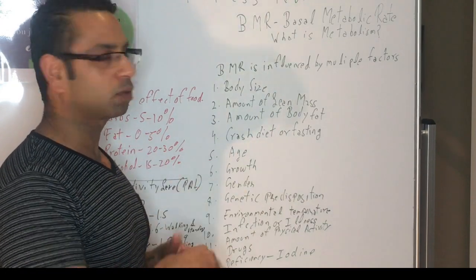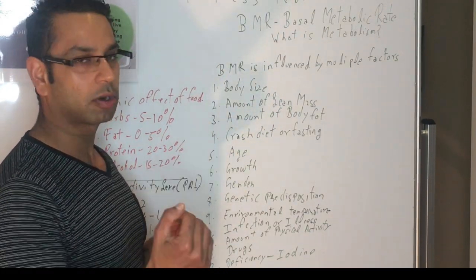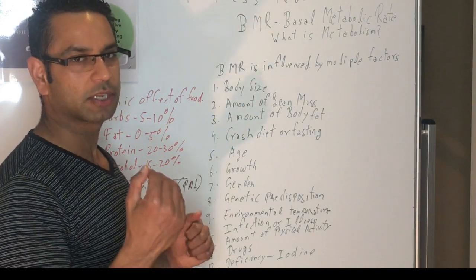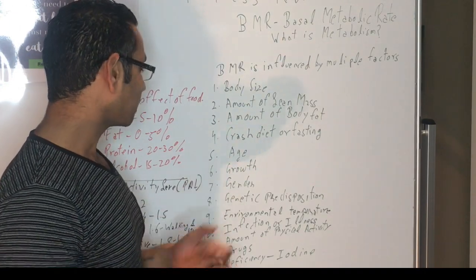The fifth one is age. What they found is that after 20 years old or 21 years old, your BMR starts dropping down. But that only happens because you're losing the muscle mass. If you maintain it, then it can still be maintained.